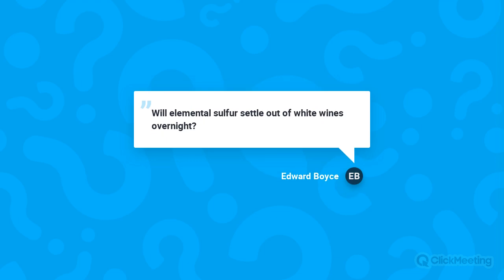On whether elemental sulfur settles out of white wines overnight: elemental sulfur can attach to other particles and potentially be removed by settling, but whether all of it is removed from the juice through settling alone isn't certain. It does bind to some grape material and may be partly removed, but I can't confirm the full extent. If you email that question, I'll try to find a more definitive answer.